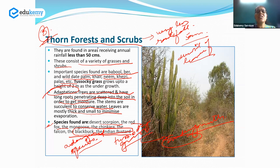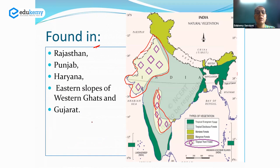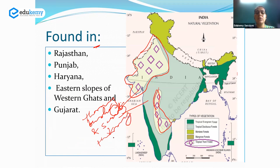Thorny forests are found in extremely dry regions, including the deserts of Rajasthan and plateau interiors. This is the spatial distribution of thorny forests of India.